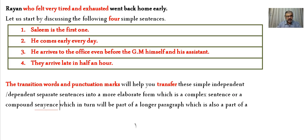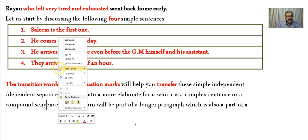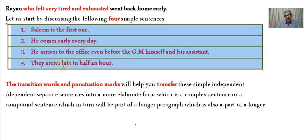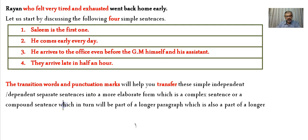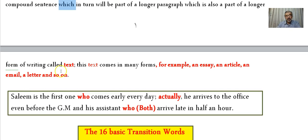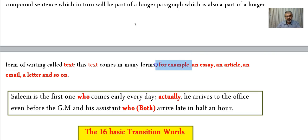I'm particularly interested in complex sentences, and I'll show you why later. Once you transfer these four simple sentences into a complex sentence, that complex sentence becomes part of a longer paragraph, which in turn becomes part of a text. A text comprises many paragraphs, and the core element of those paragraphs is the complex sentence.